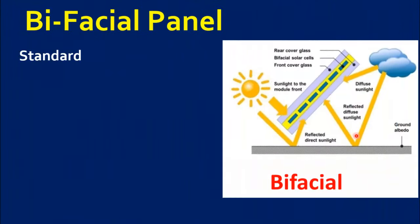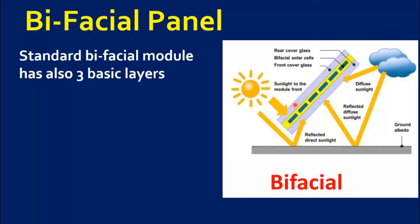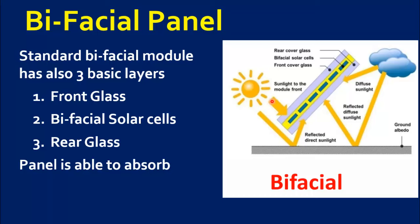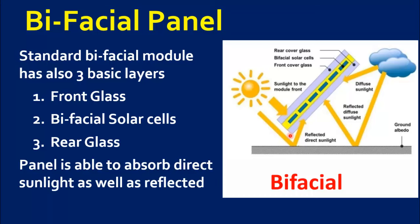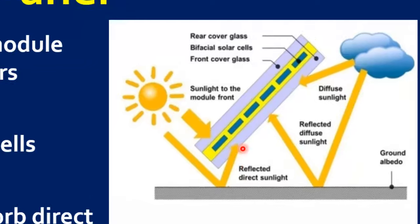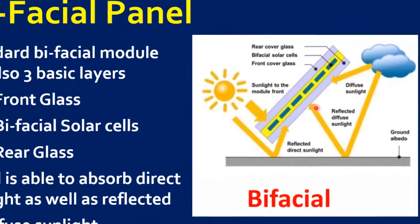A standard bifacial module also has three basic layers: front glass, bifacial solar cells, and rear glass. Because it has glass on both sides, a bifacial solar panel is able to absorb direct sunlight from the front side as well as reflected and diffuse sunlight from the rear side.